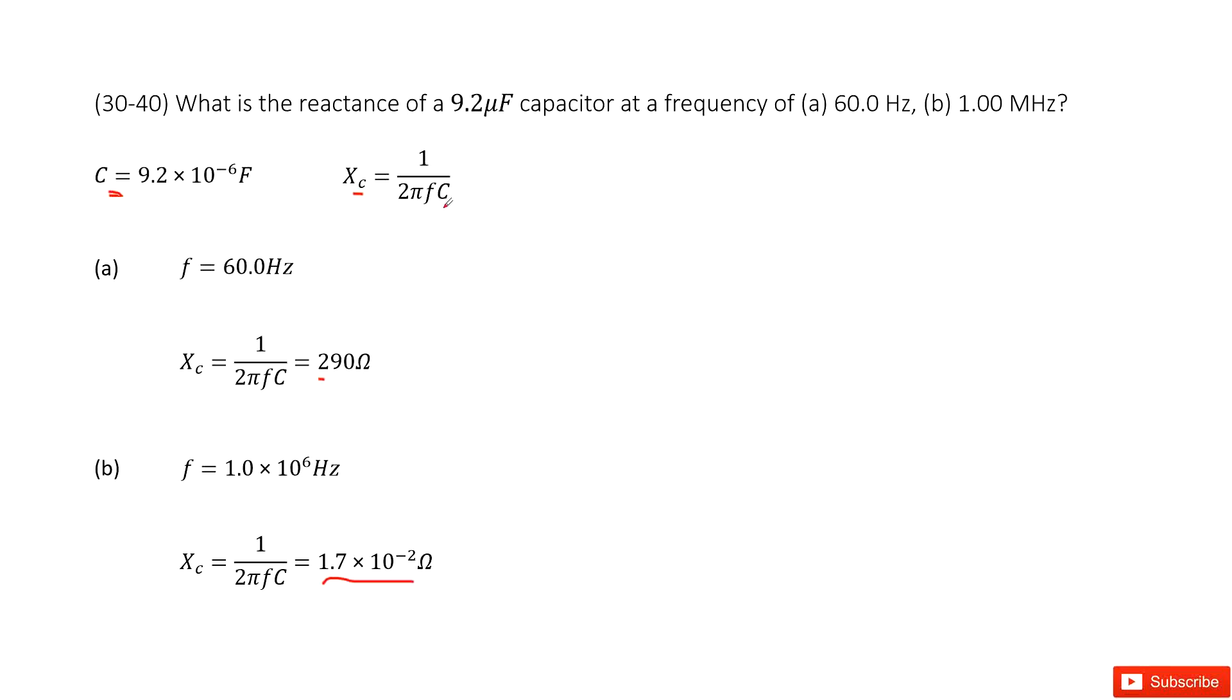So it looks like if the f becomes super big, it's a large number, so Xc can be ignored.